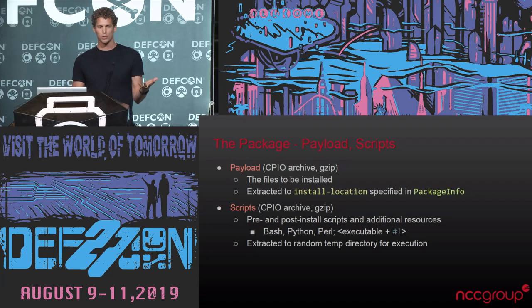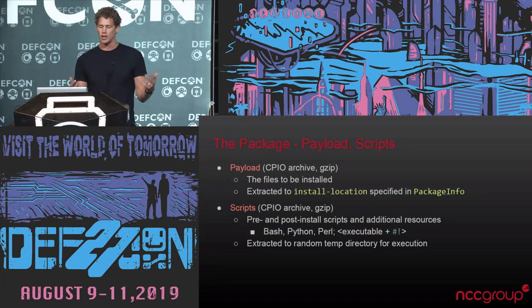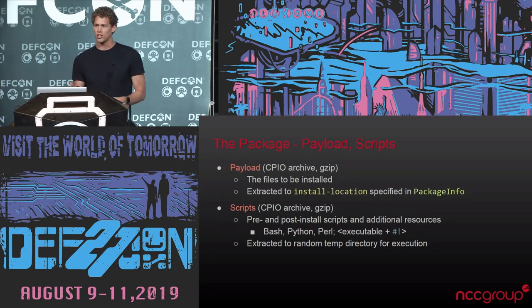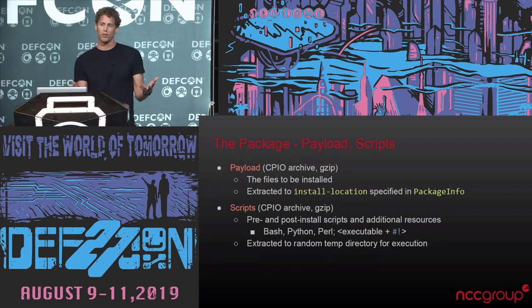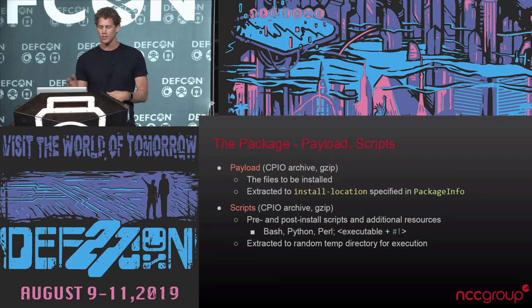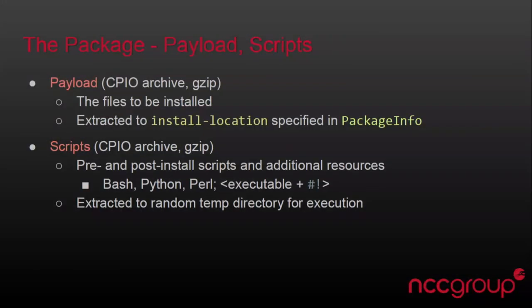You have the scripts, if there are any scripts to be run before or afterwards — same type of archive, CPIO archive. You have pre-installation and post-installation scripts, but really this can contain any executable file that has an appropriate shebang at the first line. So it's typically bash, Python, or Perl. This gets extracted by the installer into a random directory and gets executed from that location.